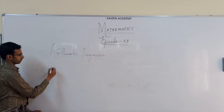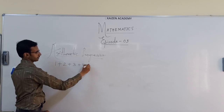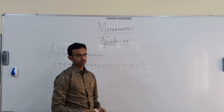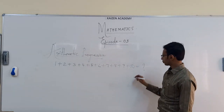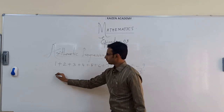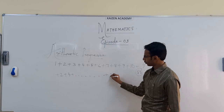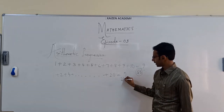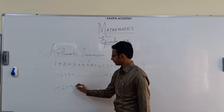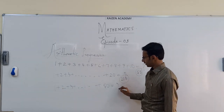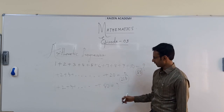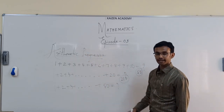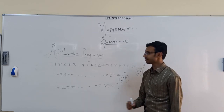If I ask you to add 1 plus 2 plus 3 plus 4 all the way up to 10, you can use a calculator or add normally — the answer is 55. Now if I tell you to add 1 plus 2 plus 3 up to 20, your mind might say 110, thinking it is just double of 55, but no — the answer is 210. And if I ask you to add 1 plus 2 plus 3 and so on up to 50 numbers, a lot of time is consumed. This chapter will teach you one small formula to add all these and get the answer quicker than a calculator.